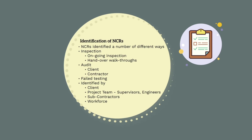NCRs can be identified through a number of different mechanisms. They can be identified through inspection, such as on handover walkthroughs or through standard ongoing inspection while completing ITPs. If we fail any requirement on an ITP that cannot be immediately rectified, this would count as an NCR. NCRs can also be identified through auditing, which may be undertaken by the quality team from either the contractor or the client. They may complete an audit to check that all ongoing works have an approved ITP in place — any works undertaken without an ITP would result in a process NCR being raised.